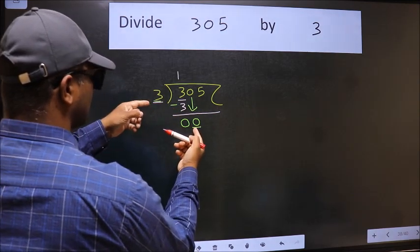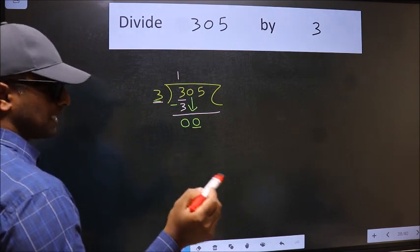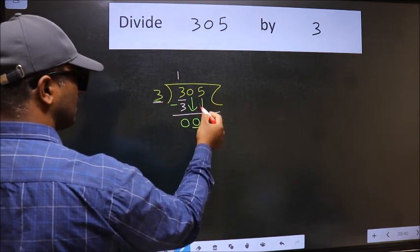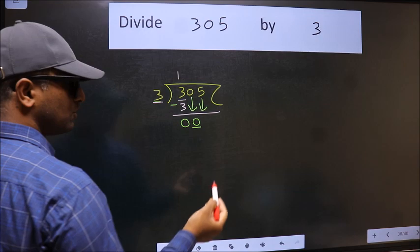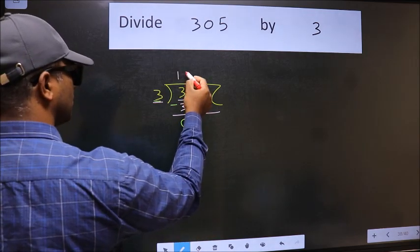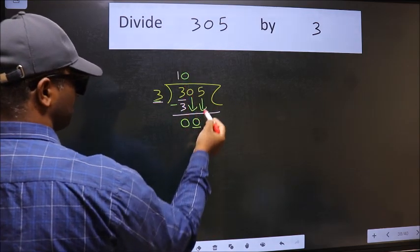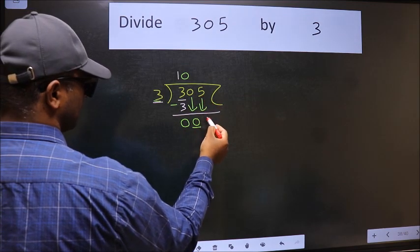0 is smaller than 3, so we should bring down the second number. And the rule to bring down the second number is we should put 0 here. Then only we can bring down this number.